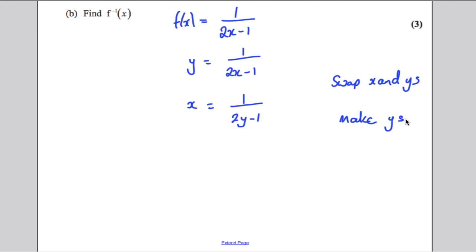Now you're going to make y the subject. So we can multiply out by (2y-1). So x(2y-1) equals 1. Multiply out: 2xy subtract x equals 1. Add x to both sides. 2xy equals 1 plus x.